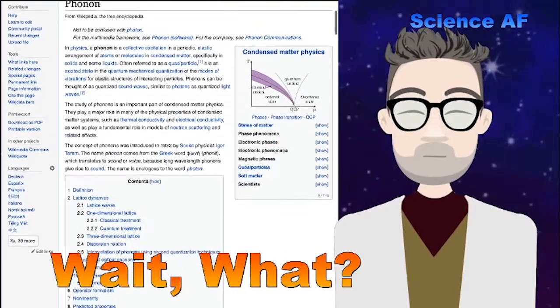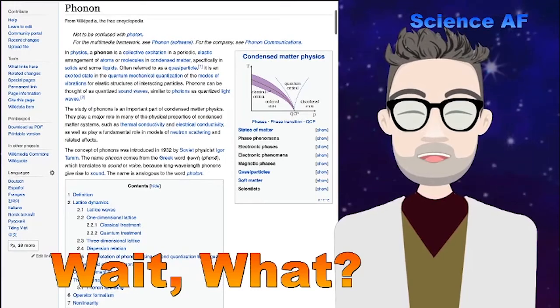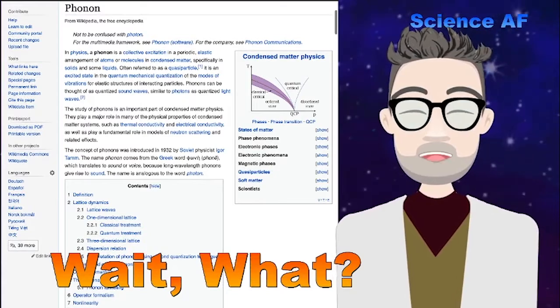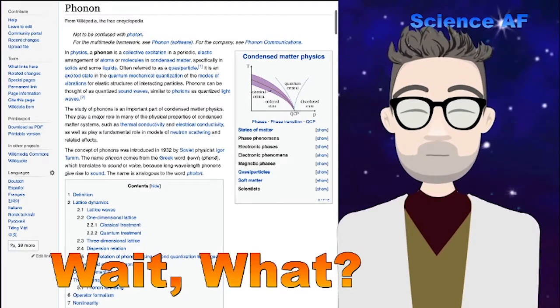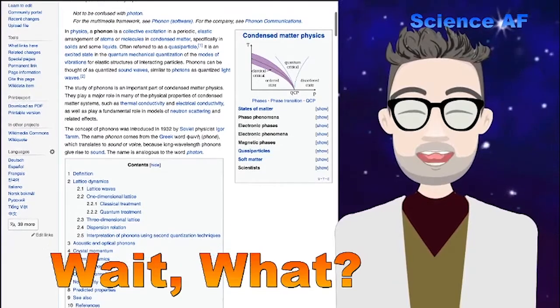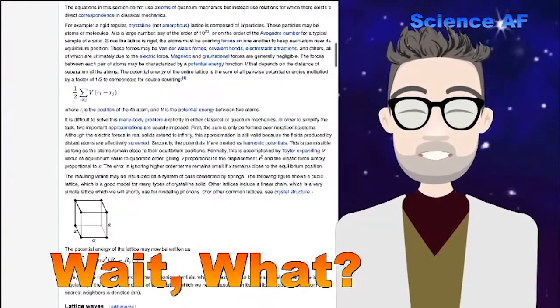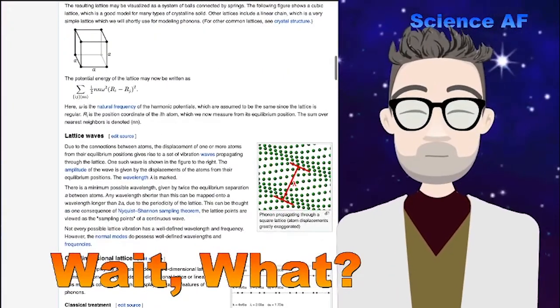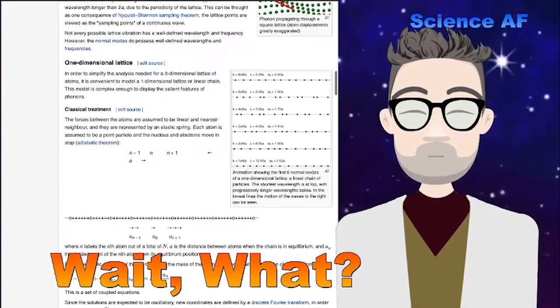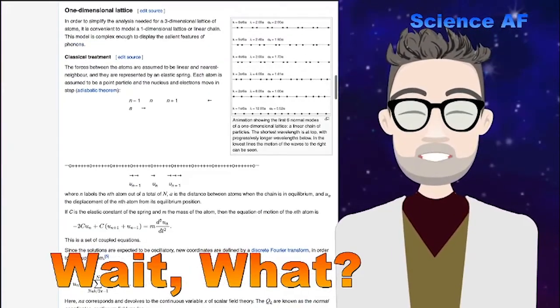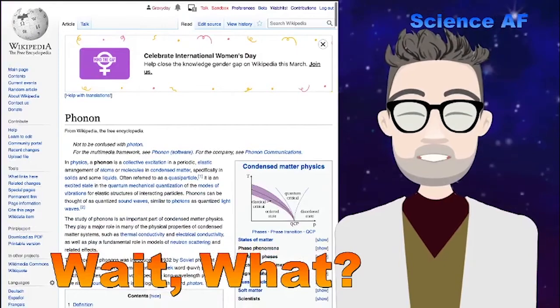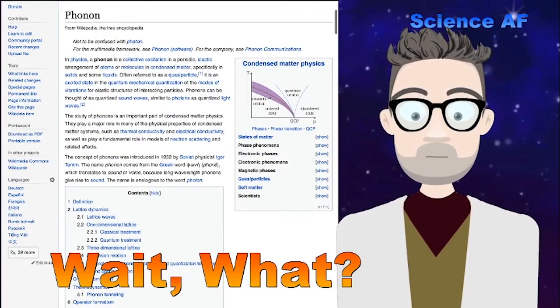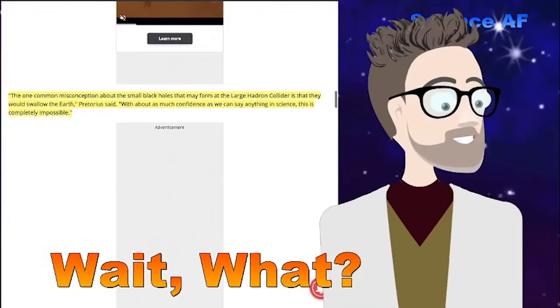They found that phonons can radiate out from this sort of liquid event horizon that they made in this rubidium atom. What is a phonon? Let's take another look. This is Wikipedia. A phonon is a collective excitation in a periodic elastic arrangement of atoms or molecules in condensed matter, specifically in solids and some liquids, referred to as a quasi-particle. It's sort of a wave. It's a wave in matter. It's a wave in matter, but it acts like a particle in some ways in tiny places. Excuse me. It's not COVID.